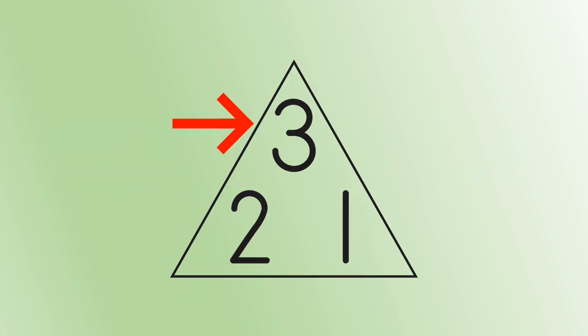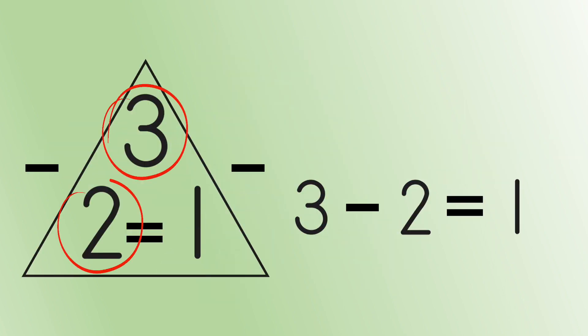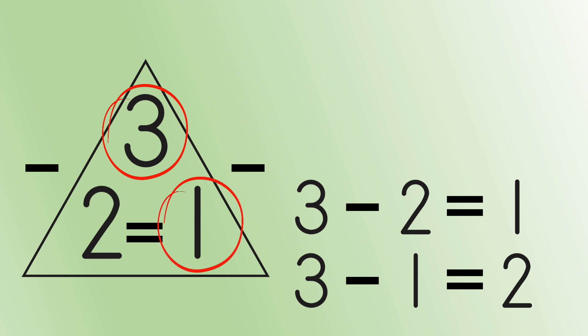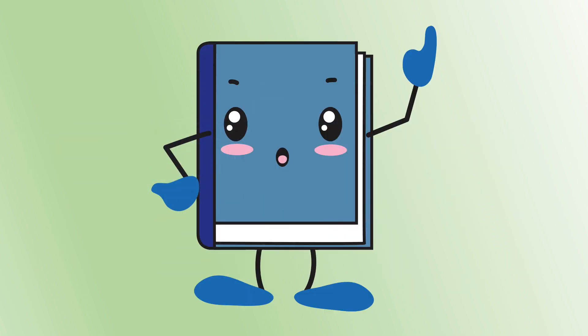Next, he tried subtraction. Start at the top, go down and over. 3 minus 2 equals 1, and go down the other way. 3 minus 1 equals 2. Baxter had it all figured out.